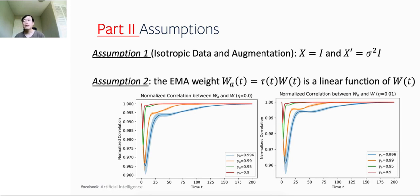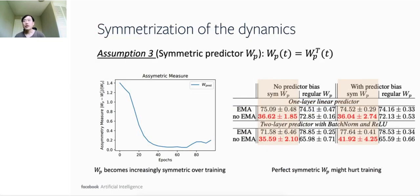To get further insights about the dynamics, we make the following assumptions. First, we assume that the data distribution and data augmentation distribution are isotropic. That is, we assume the covariance of the data Σ is an identity matrix, and the covariance of augmentation Σ' is isotropic with variance σ². Second, we assume that the EMA weight on the target network points to the same direction as the online weight, and differs by only a scalar. The experiments show that it is indeed the case for our simple dynamics that satisfy assumption 1. The symmetric assumption is also inspired by the empirical results, which is the third assumption we will make for this analysis.